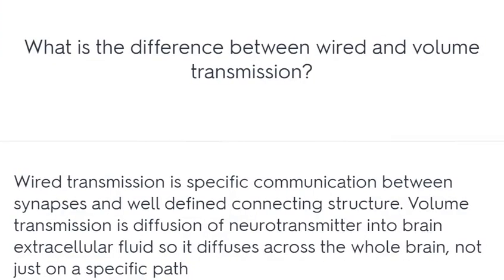What is the difference between wired and volume transmission? Wired transmission is specific communication between synapses with a well-defined connecting structure. Volume transmission is diffusion of neurotransmitter into the brain extracellular fluid, so it diffuses across the whole brain, not just on a specific path.